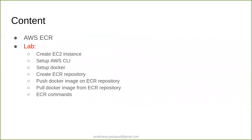In this demo, I am going to cover the following topics: create an EC2 instance, set up AWS CLI and Docker inside the EC2 instance, create an AWS ECR repository and push a sample Docker image to the ECR repository, pull a sample Docker image from the ECR repository, and we will also see a couple of ECR commands.